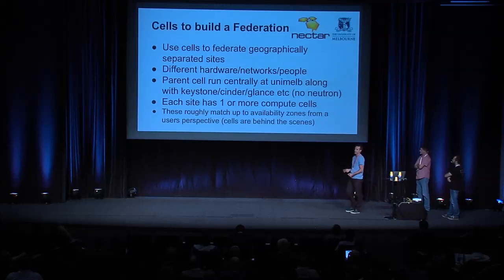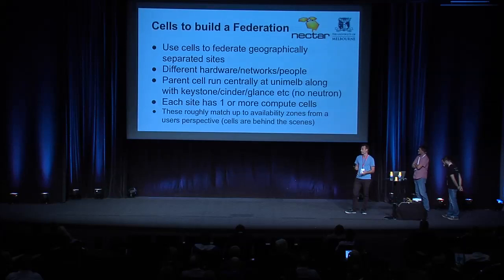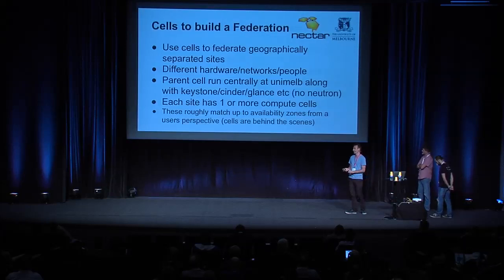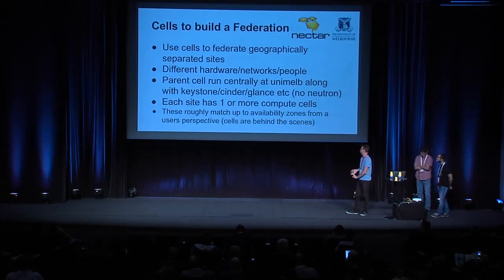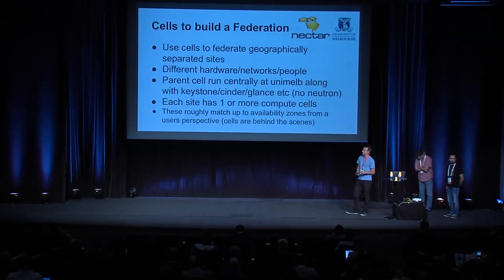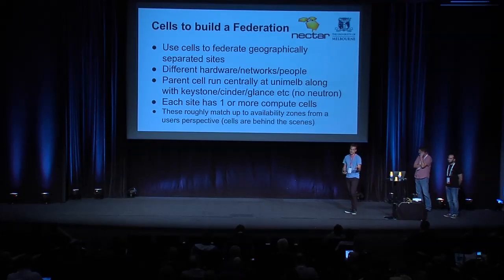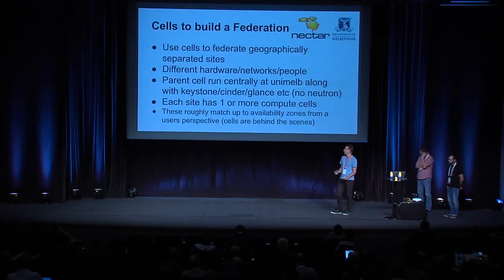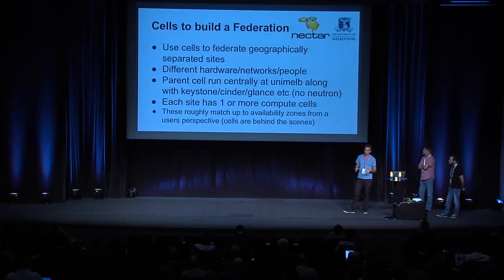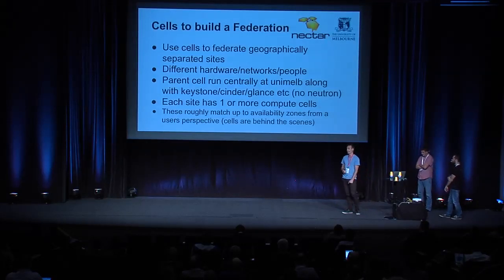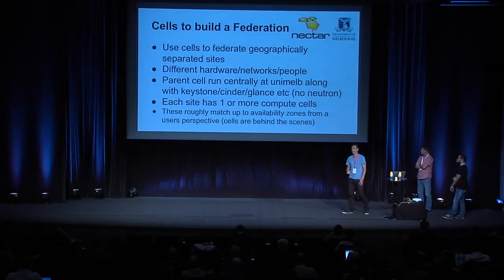We run a parent cell as well as all the other OpenStack infrastructure like Cinder, Glance, Ceilometer, and Heat, all centrally. Then each of the nodes is really just tasked to run compute nodes and some of the Nova scheduler infrastructure. In that sense, we have a core knowledge base in one site, and the other nodes don't really need to have as much knowledge base in OpenStack. So it's been a lower operational cost for us.